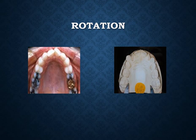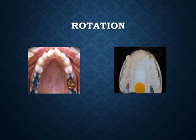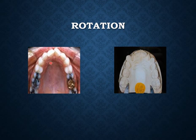Rotation is a type of malocclusion in which a tooth is rotated about its long axis. It is most evident when viewing the tooth from an occlusal perspective and is mostly caused by crowding. It is subdivided into mild rotation, which is less than 90 degrees and can be treated easily by a removable orthodontic appliance using a couple force system.